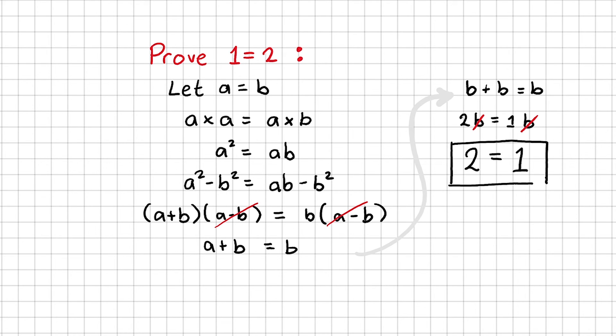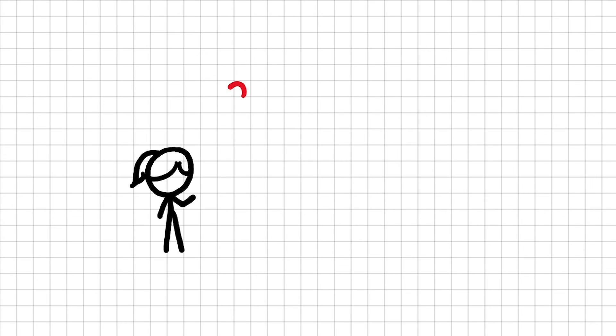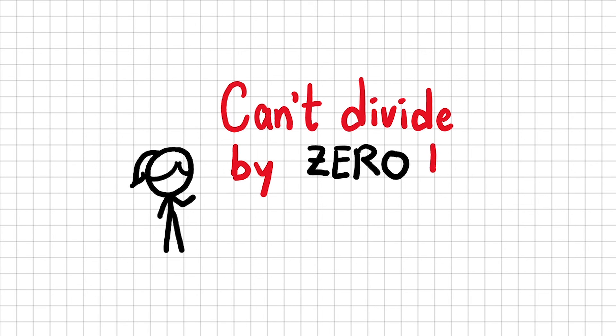We know that's not true, so what's wrong with my proof? If A is equal to B, they are the same number, so A minus B equals 0. So that means when I made the cancellation here by dividing both sides by A minus B, I essentially divided by 0. And we know that the laws of mathematics prohibit us from dividing by 0.